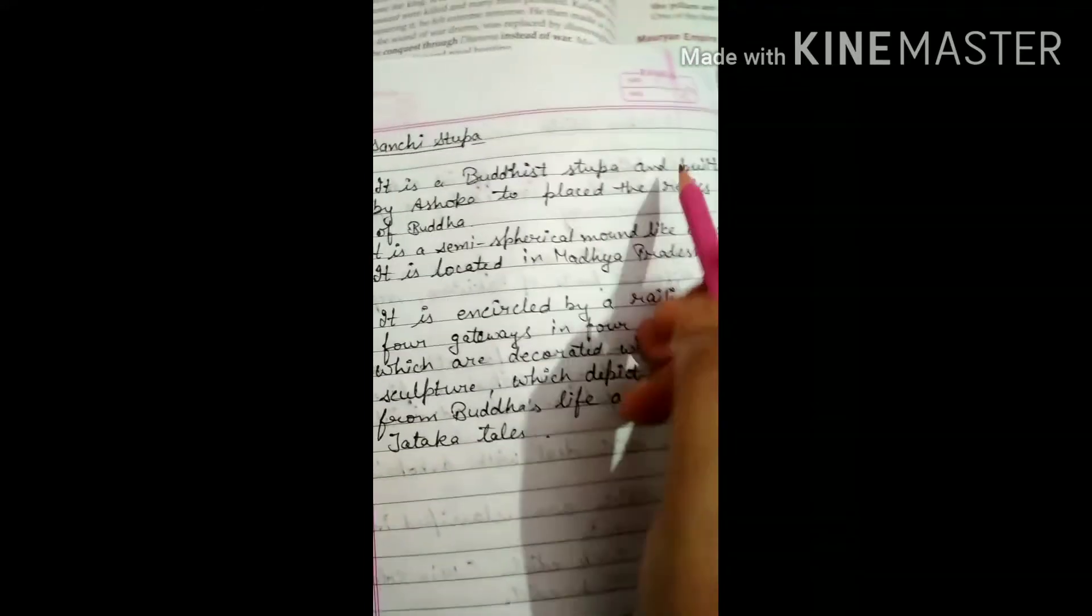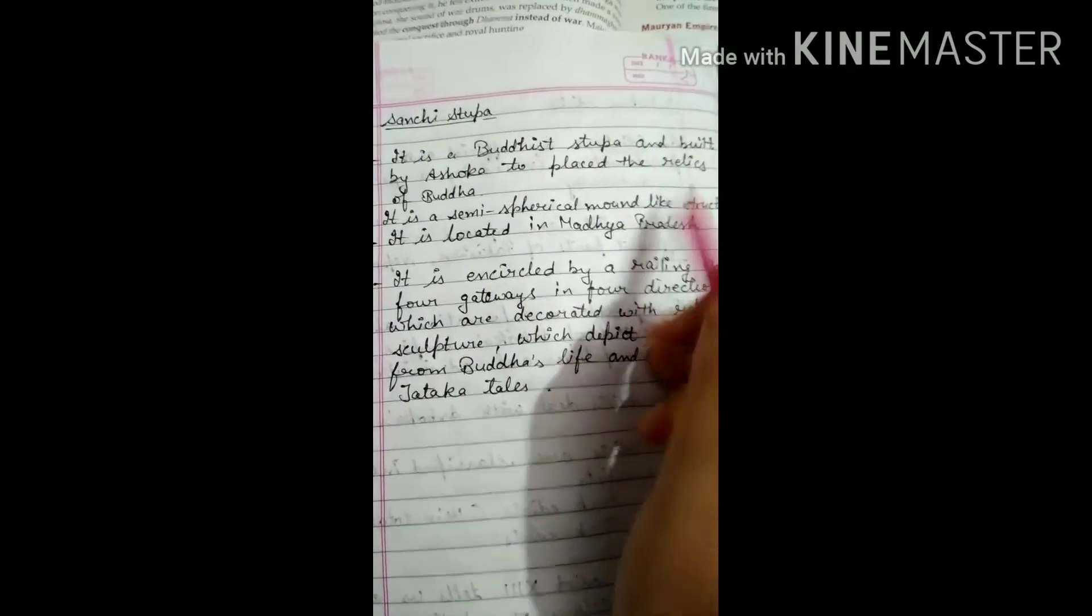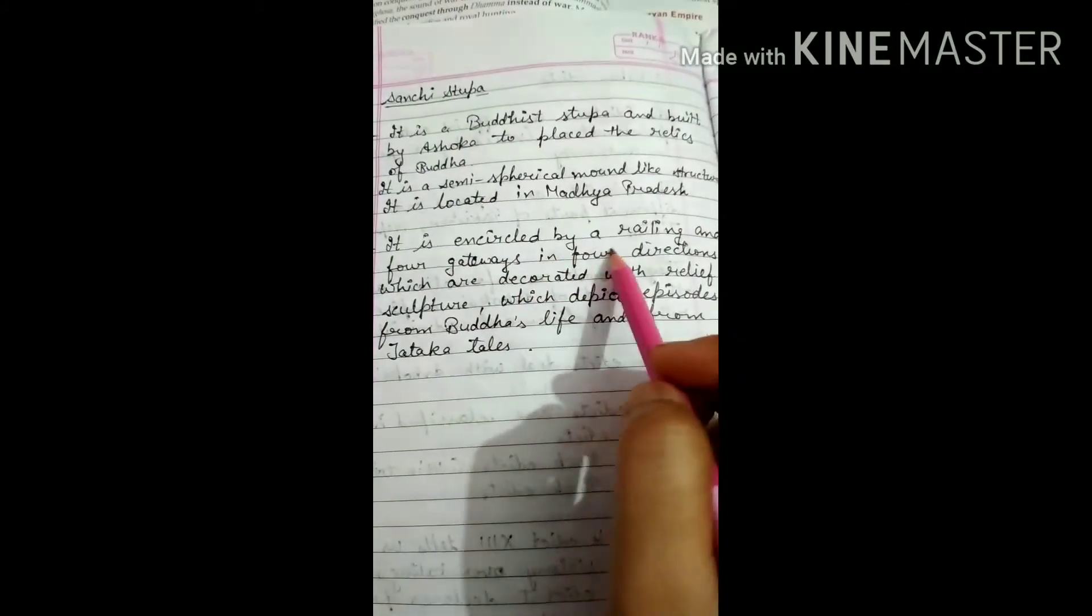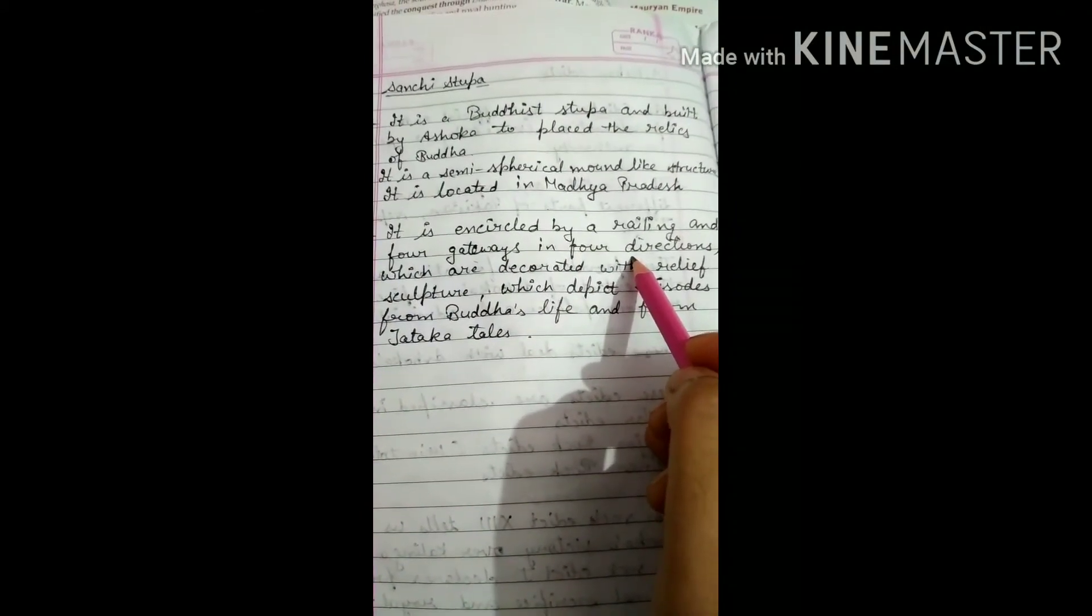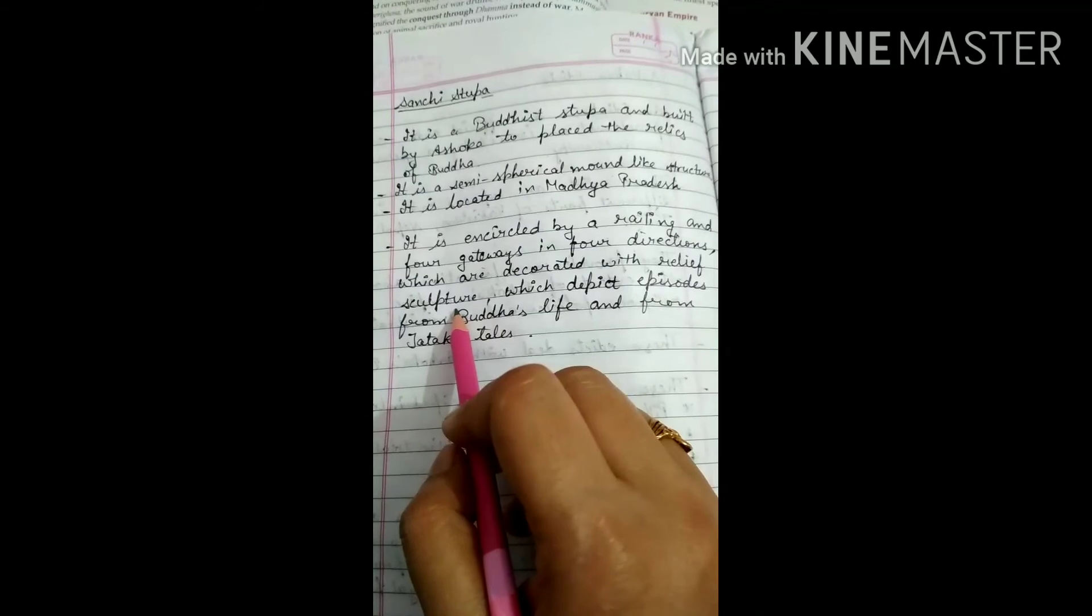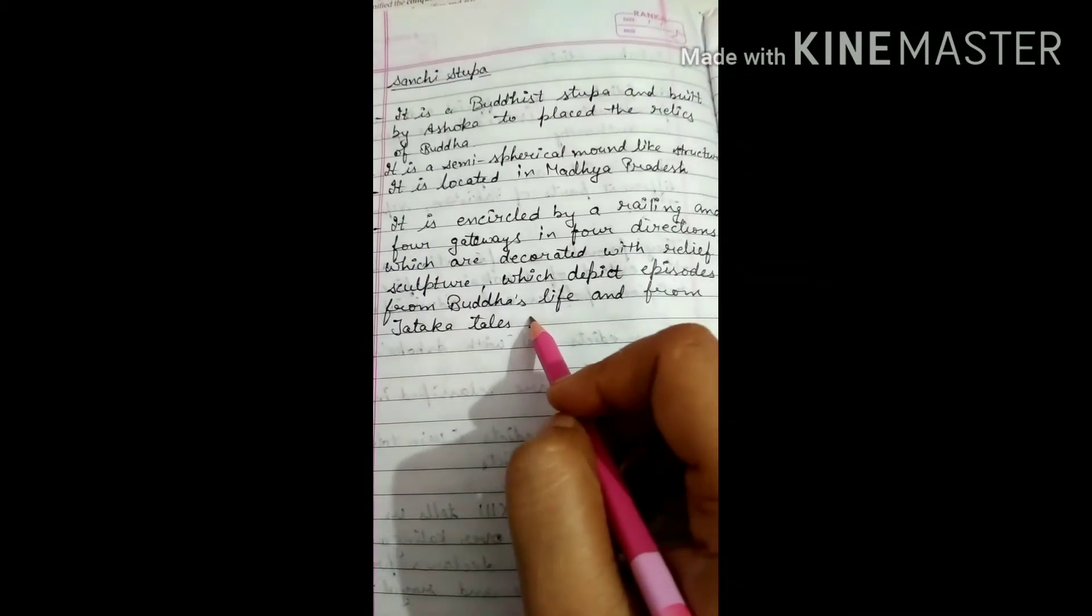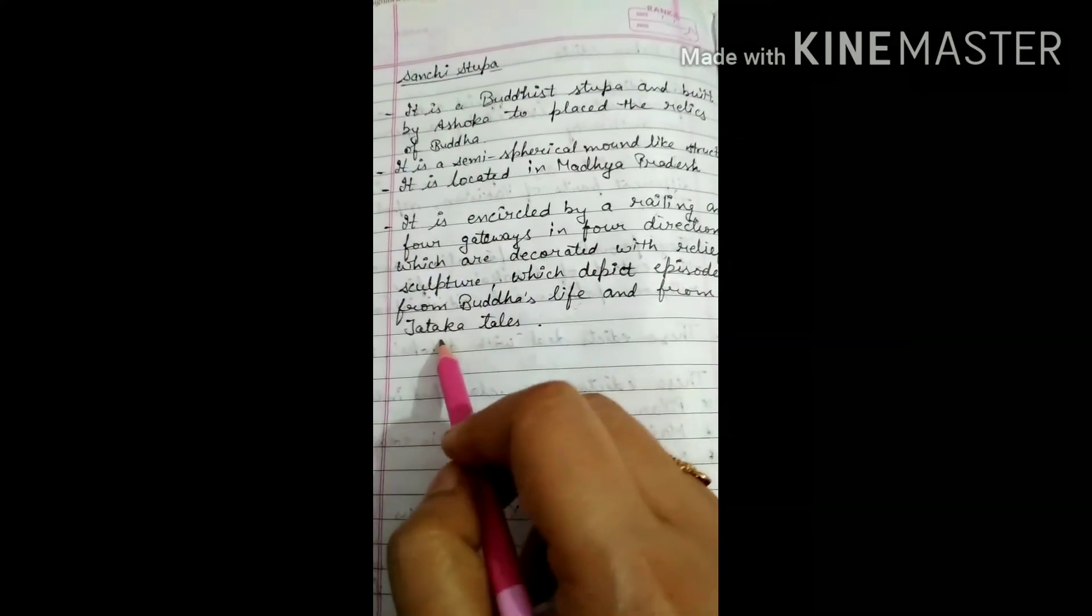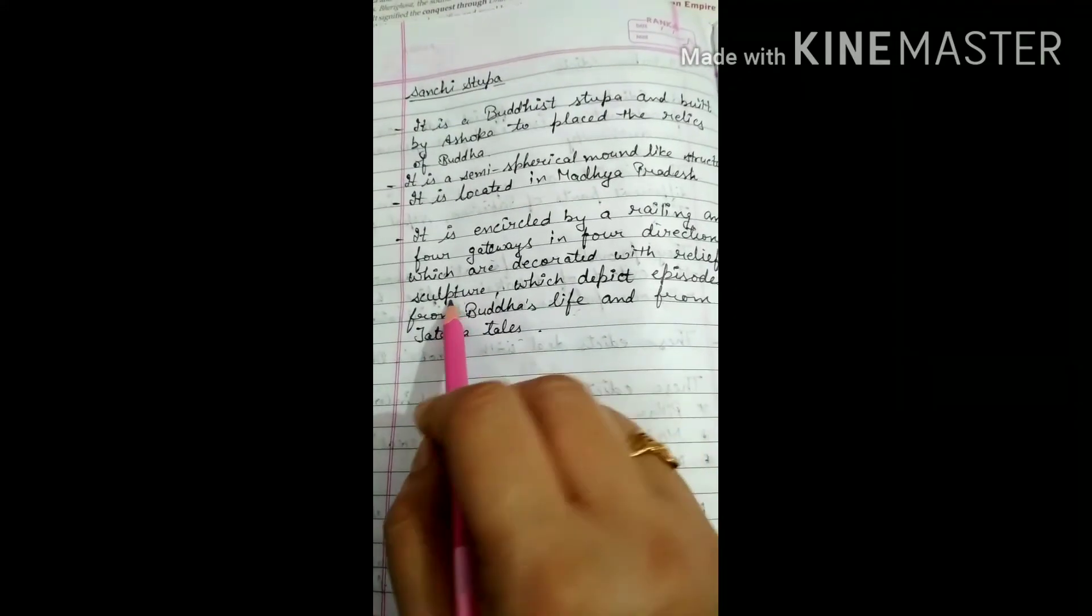It is a Buddhist stupa built by Ashoka to place the relics of Buddha. It is semi-spherical mound structure and it is located in Madhya Pradesh. It is encircled by a railing and four gateways are there in four directions, which are decorated with relief sculptures. Relief sculptures mean it is decorated with murtis. It depicts episodes from Buddha's life and from Jataka tales. These sculptures are from Buddha's life and the previous birth stories.